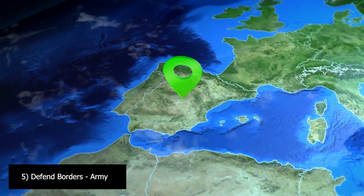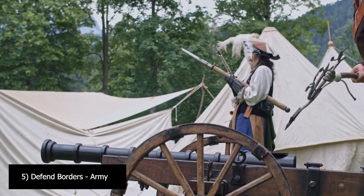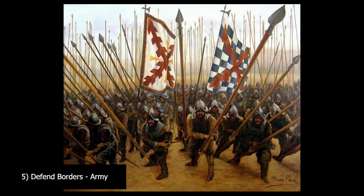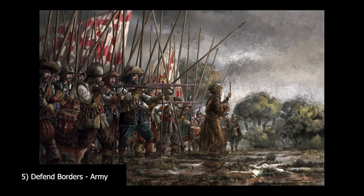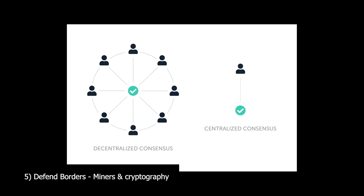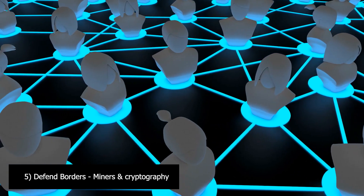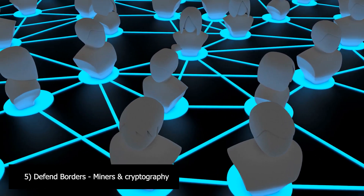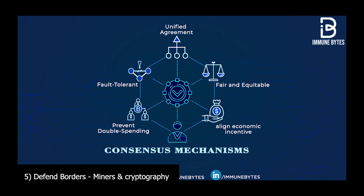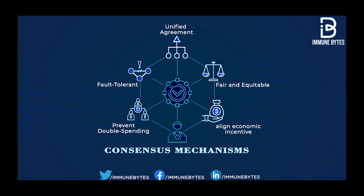They both also have the ability to defend their borders. With the Spanish empire, they had a pretty advanced army and weapons at the time — access to gunpowder, intricate army formations — which actually led to their great expansion. For Bitcoin, to defend against fraudulent transactions, we have the Bitcoin miners who provide security through hardware and through cryptography.